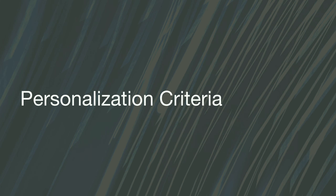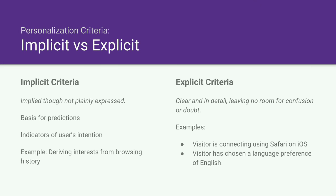Now we'll walk through briefly some of the criteria used to personalize the digital experience — what do we use to tailor the content? In this conversation about personalization criteria, the categories involved are often implicit and explicit criteria. Implicit criteria is implied but not plainly expressed — often the basis for predictions or indicators of a user's intention. An example would be looking at the click path a visitor takes through your site and making assumptions on what their interests are based on what content they viewed. Explicit criteria, by comparison, is clear, leaving no room for confusion — for example, this visitor is connecting from Safari on iOS, or this visitor has chosen a language preference of English.